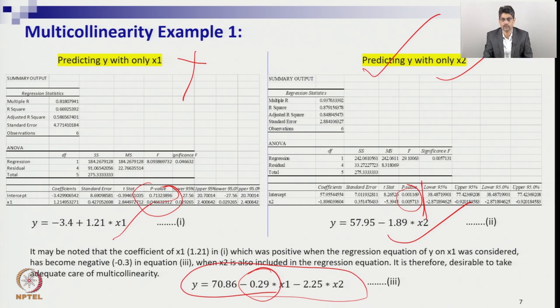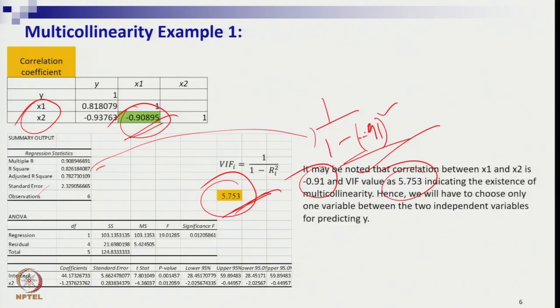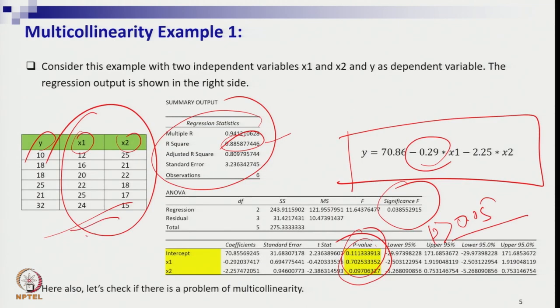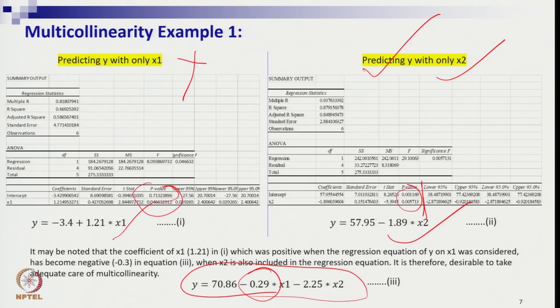This is how multicollinearity can be identified and handled. Even testing the data by forecasting with new values in the individual regressions of x1 and x2, we found that x2 is always better in terms of prediction performance and accuracy. So we conclude that x2 is the better predictor.